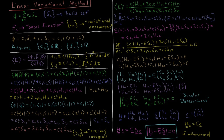Using H_12 equals H_21, the two cross terms c1 c2 H_12 plus c2 c1 H_21 simply become 2 c1 c2 H_12. This leaves us with three terms in the numerator: c1-squared H_11, plus 2 c1 c2 H_12, plus c2-squared H_22. These three terms constitute our numerator, the phi-star H phi integral.